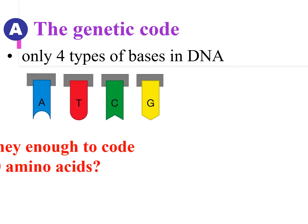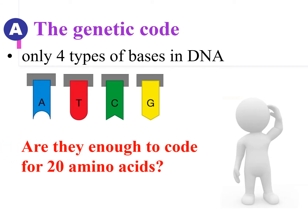To understand how the DNA with the genetic codes codes for an amino acid, and then the amino acids join together to form the polypeptide, and then the polypeptide coils up to become the protein, we have to take a look at the genetic code first. For the genetic code, it consists of nitrogenous bases. And there are four types of nitrogenous base: A, T, C, and G.